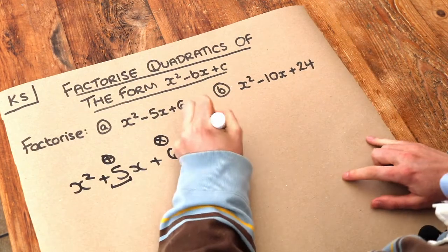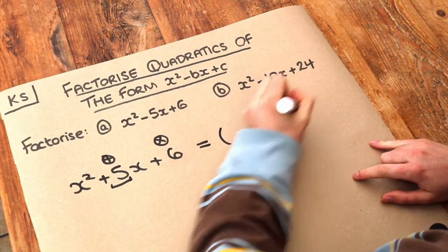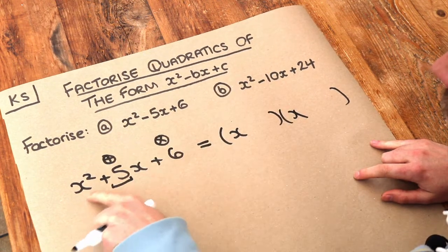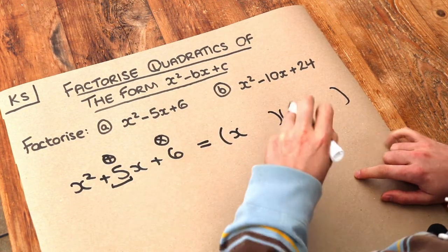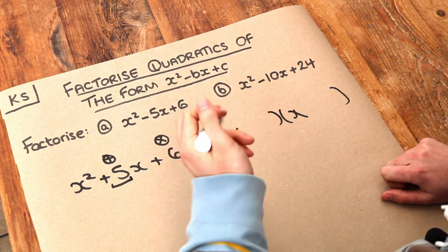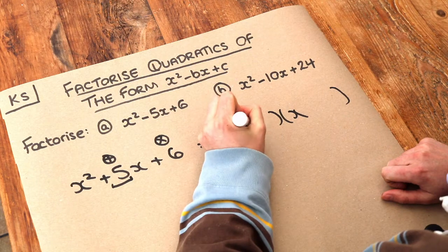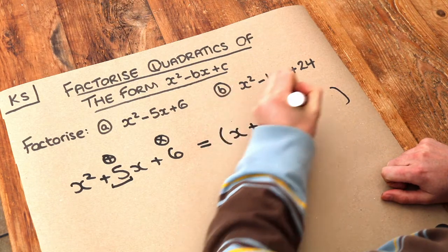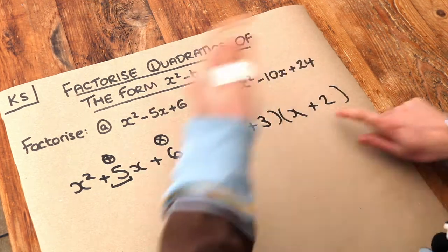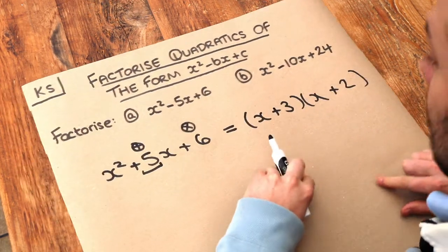So what we did is we had two brackets with x at the start of each, and then we used those two numbers. So if the numbers were 3 and 2, we could do plus 3 and plus 2. And they could go either way round, it doesn't actually matter.